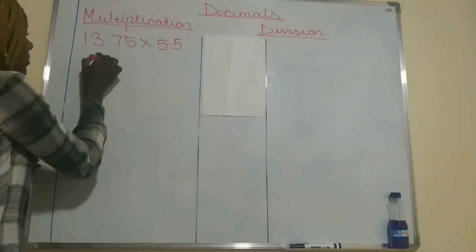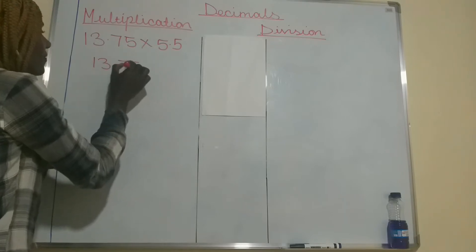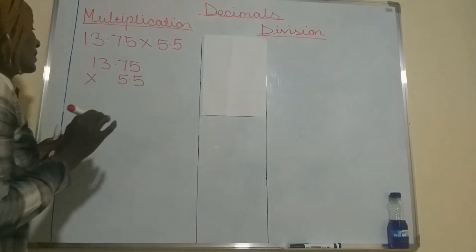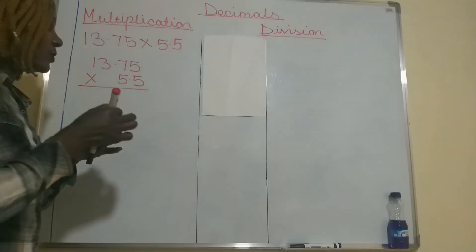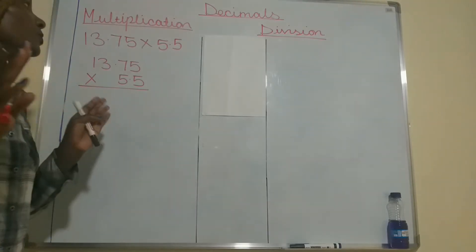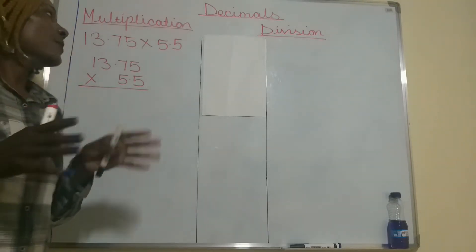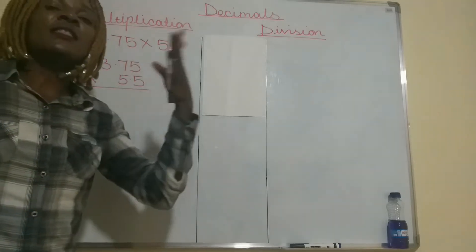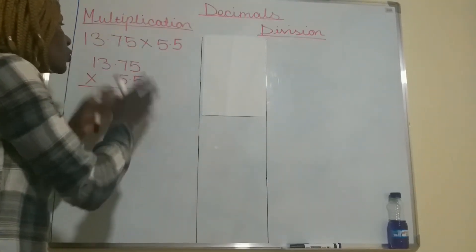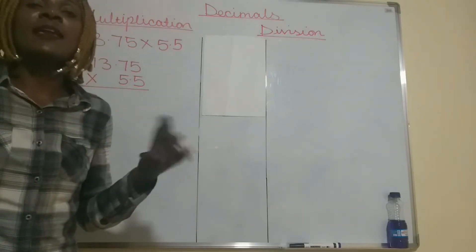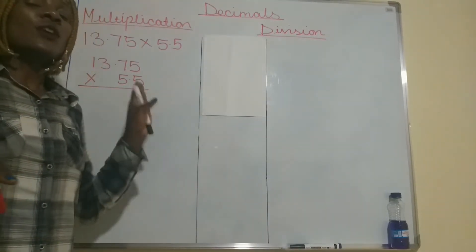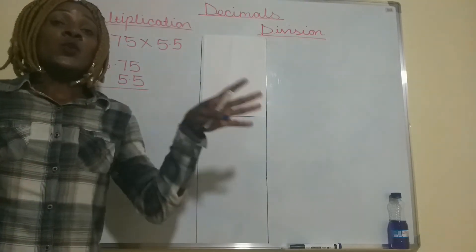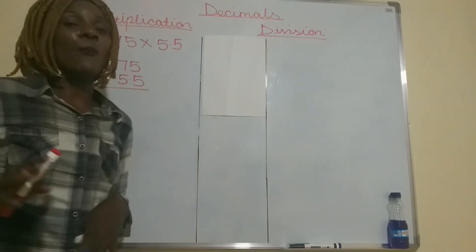You're going to put your 13.75 there and then the 5.5 there with your multiplication sign. When you're multiplying, you have to ignore the decimal point because you are going to look at the decimal point later on. You multiply just the way we usually do with any other numbers that do not have decimals, and after you multiply, that is when you look at the decimal places.